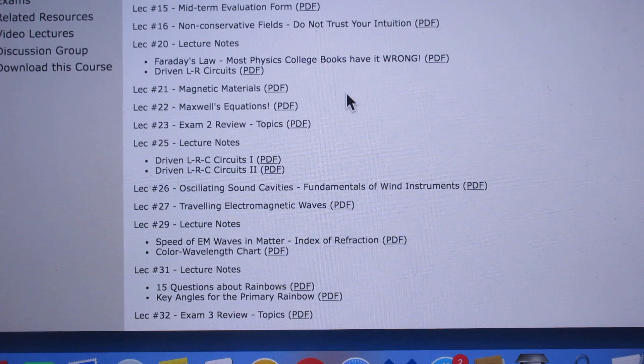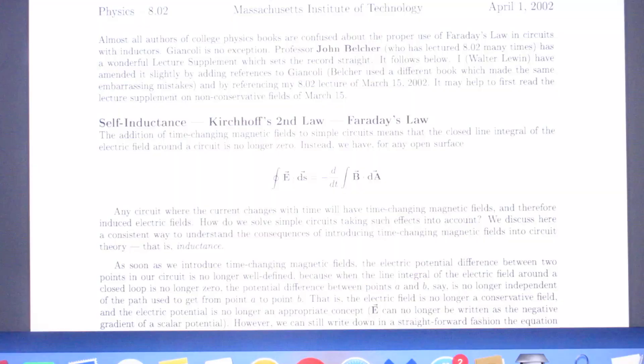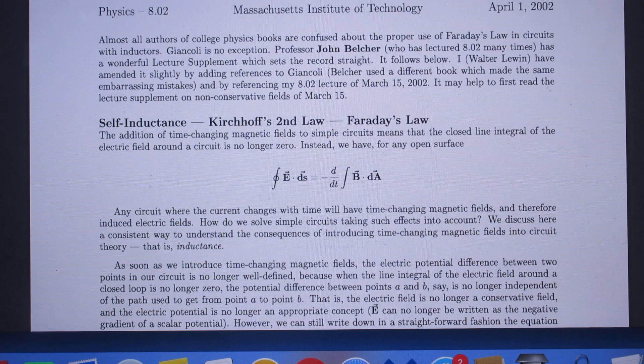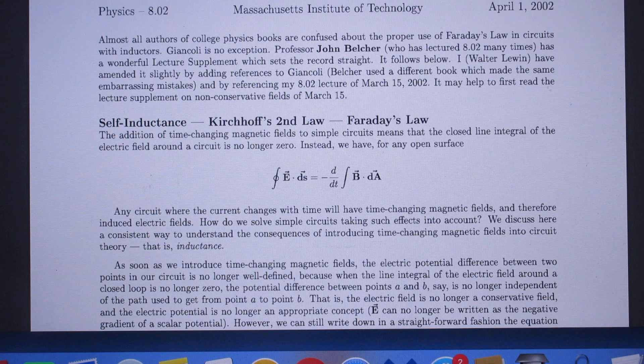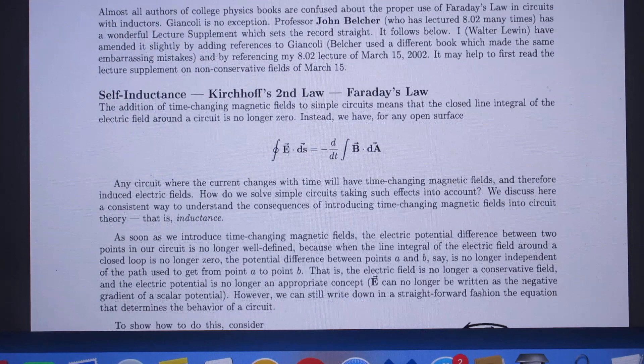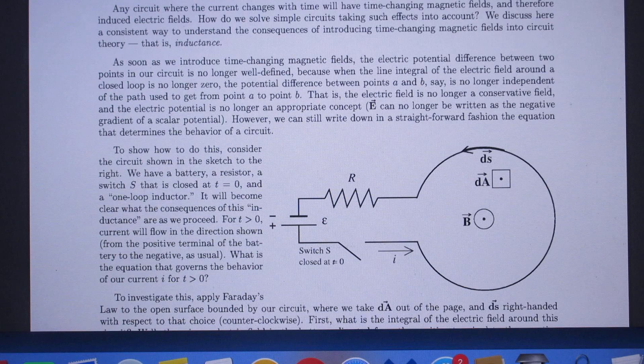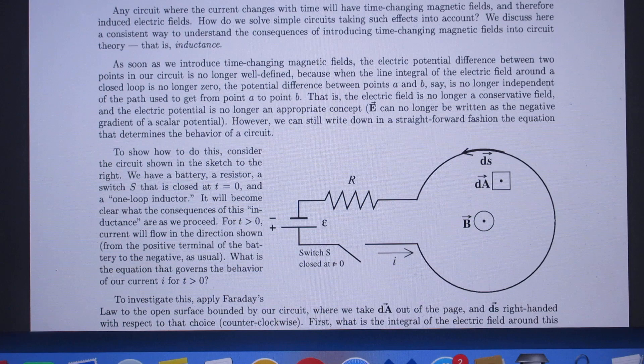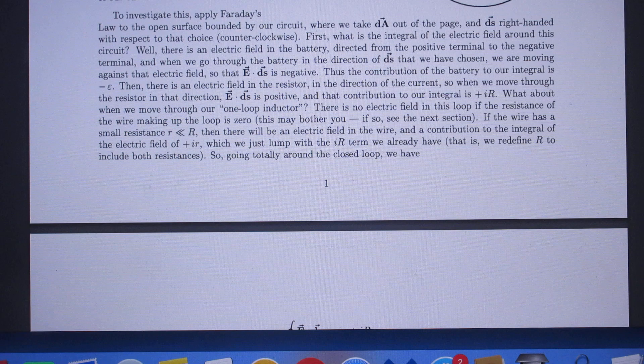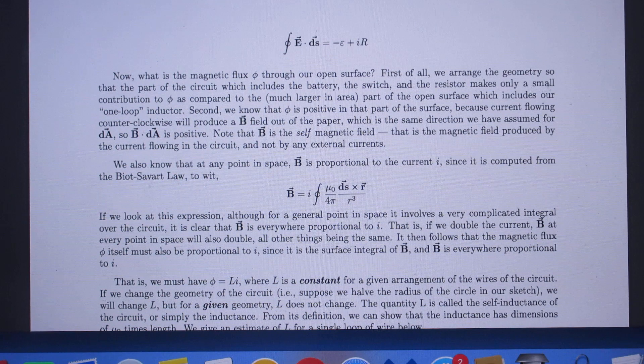Lecture 20. Most physics college books have it wrong. Also a very important handout which was largely written by my colleague Professor John Belcher, and I adjusted it to my own lectures. This is perhaps the most important handout of my entire 802 lectures. I repeat, the credit goes to John Belcher.